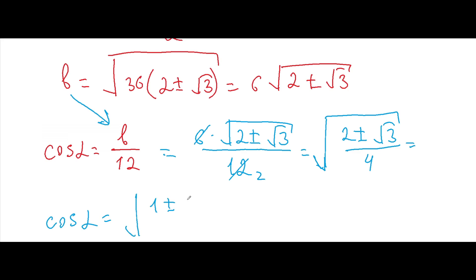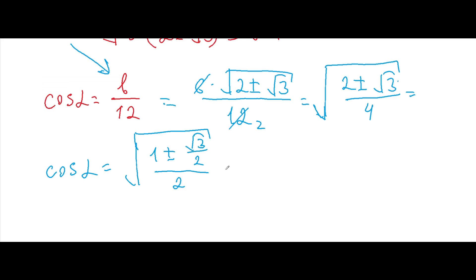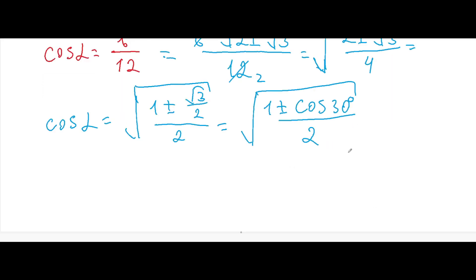Cosine alpha equals the square root of (1 plus or minus square root of 3 over 2) over 2. I multiplied numerator and denominator by one-half. We know that square root of 3 over 2 is cosine 30 degrees, so this becomes the square root of (1 plus or minus cosine 30 degrees) over 2, which equals cosine 15 degrees or cosine 75 degrees.